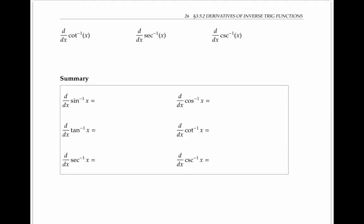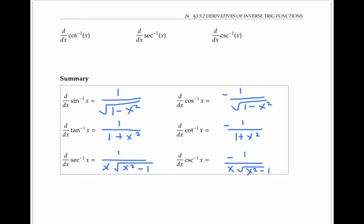The other inverse trig functions — cotangent inverse, secant inverse, and cosecant inverse — have derivatives that can be computed similarly. The following table summarizes these results. In some books you may see absolute value signs around x for inverse secant and inverse cosecant; this discrepancy comes from differences in convention for the range of y. Notice that the derivatives of the inverse trig functions that start with 'co' all have negative signs in front of them and are the negatives of the corresponding non-co functions — that makes them easier to remember. You should memorize these formulas.